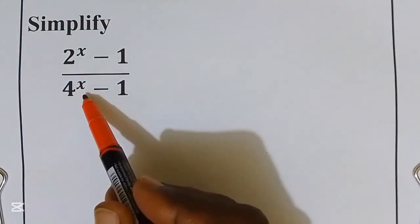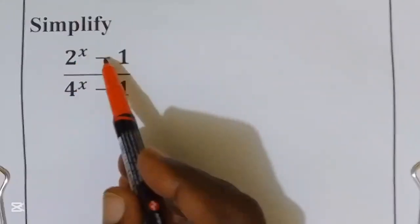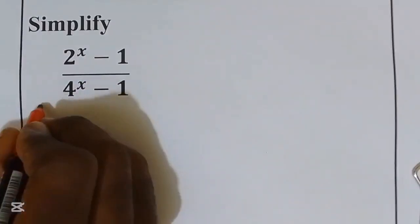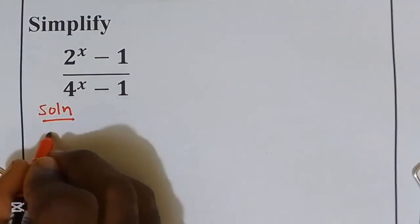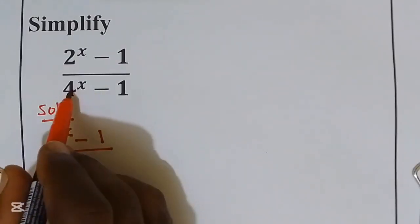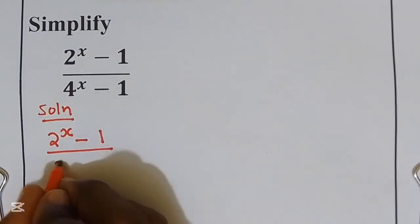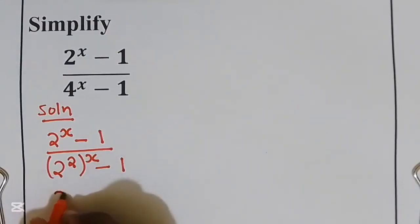When you look at the question, you can see in the denominator we have 4^x - 1. I'm going to write 4 as 2^2, so that becomes (2^2)^(x-1), which equals 2^(x-1).